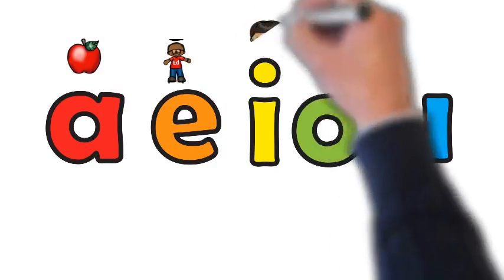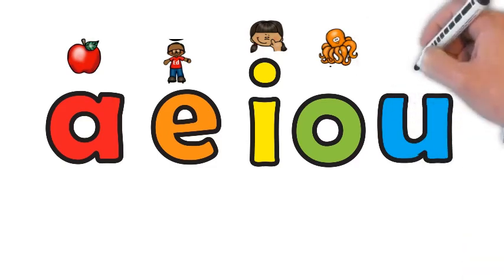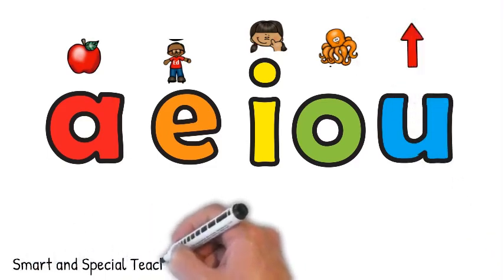The keyword for I is itch. The keyword for O is octopus. The keyword for U is up.